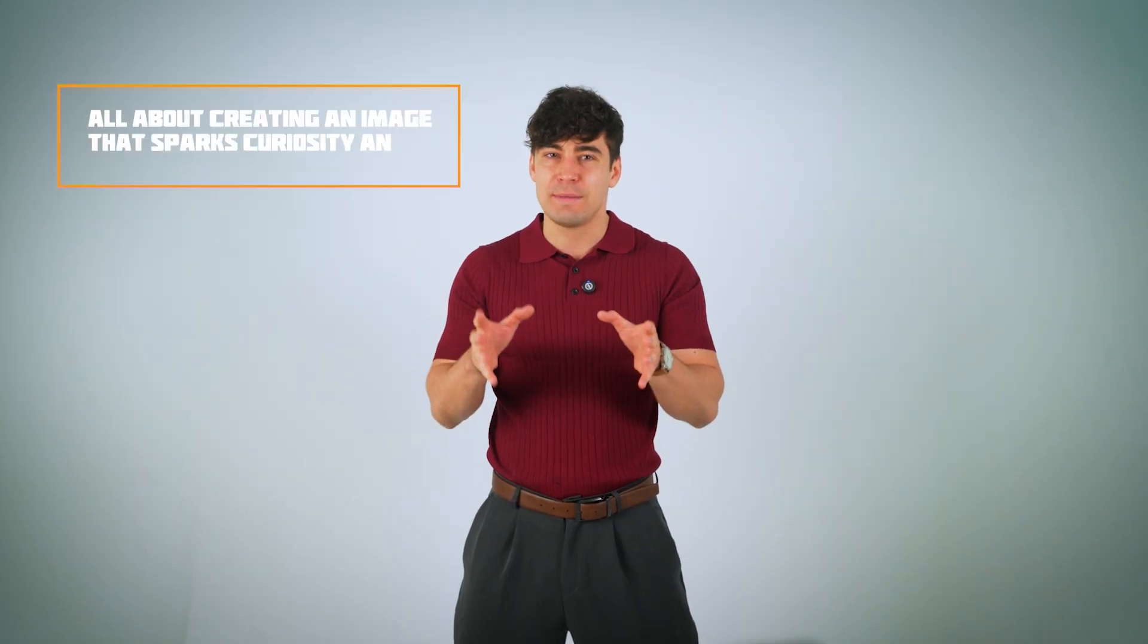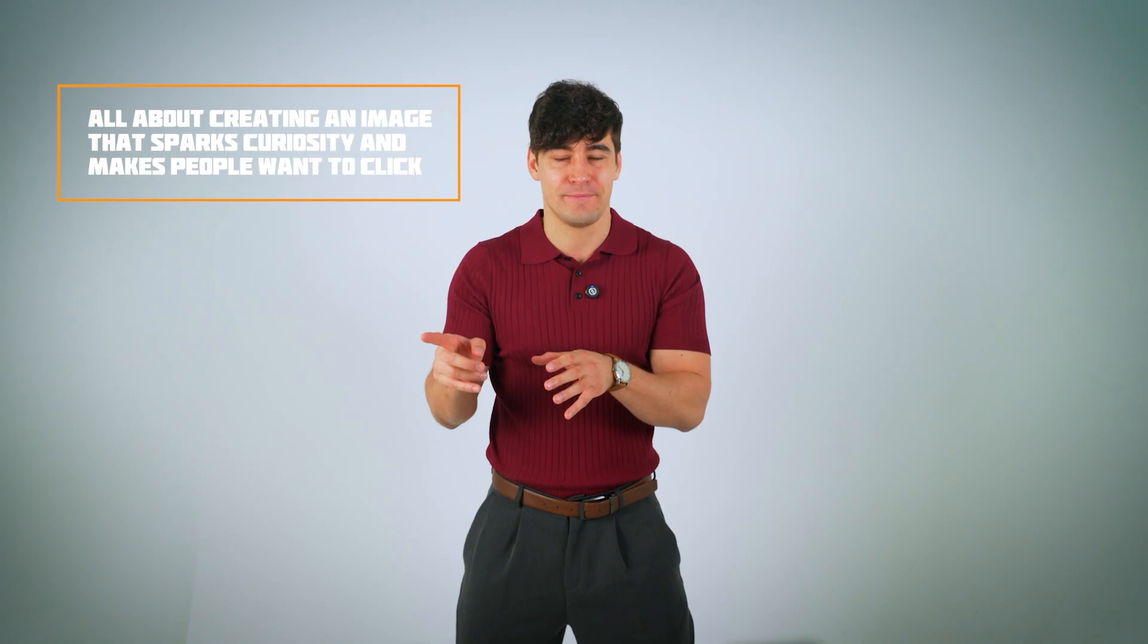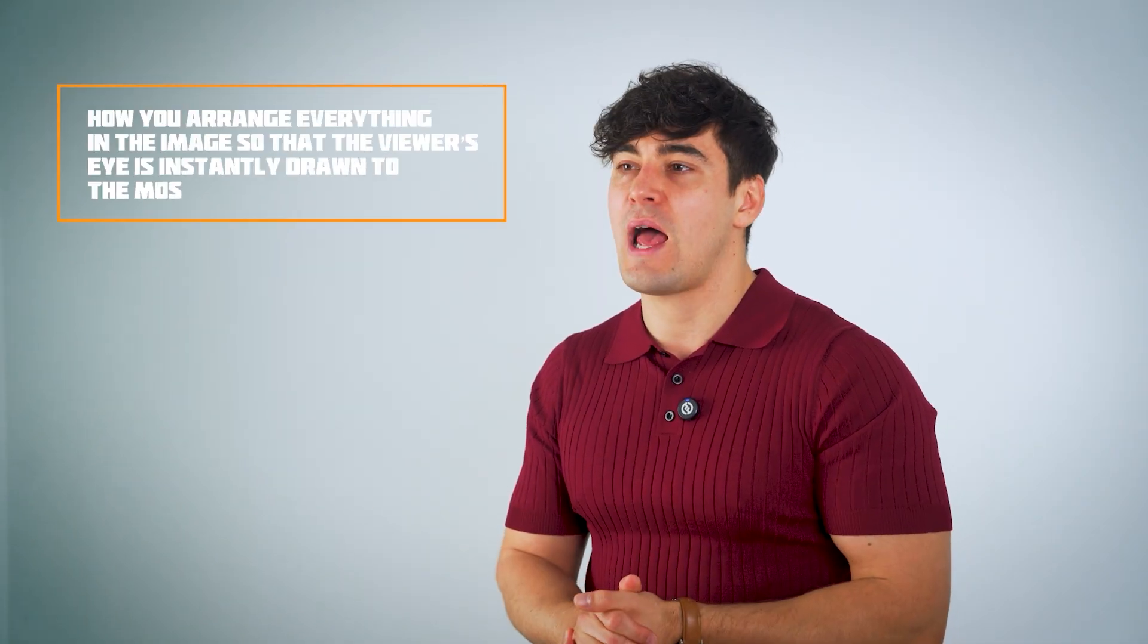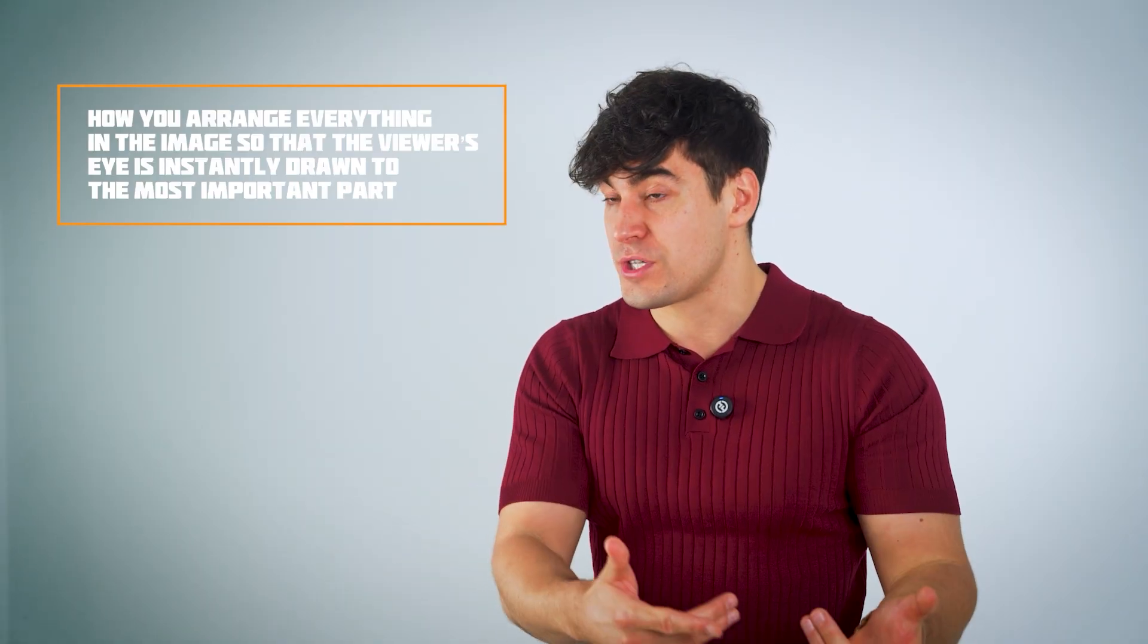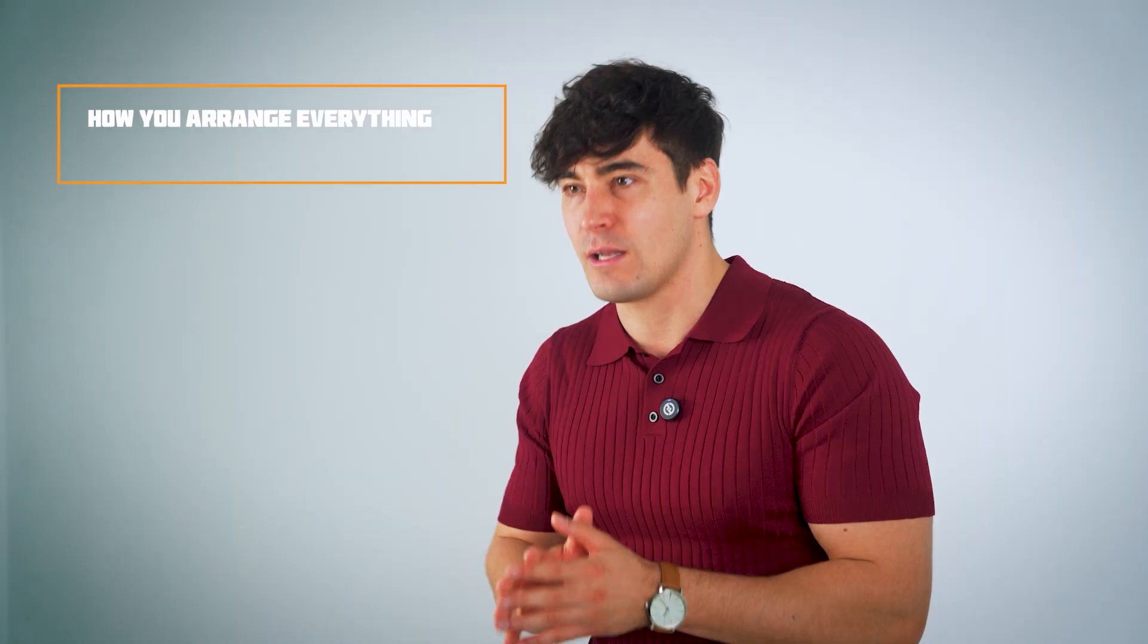What do those terms mean? Conversion, in the context of thumbnails, is all about creating an image that sparks curiosity and makes people want to click. That could be a bright expressive face, high-contrast colors, or an intriguing bit of text. Composition is how you arrange everything in the image so that the viewer's eye is instantly drawn to the most important part. That's why a minimalist look is often best. YouTube users scroll past hundreds of thumbnails every minute, and if yours looks like visual noise, they'll just skip it.